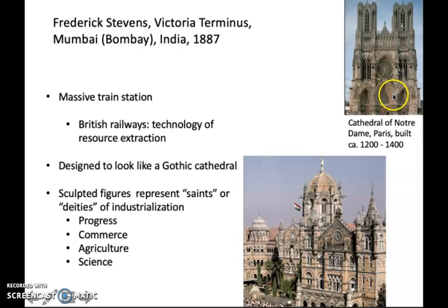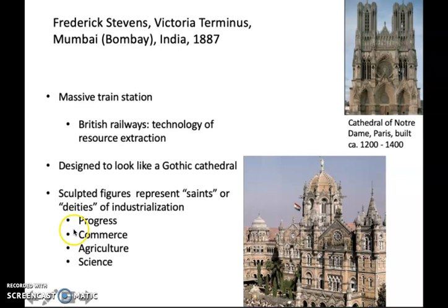In Gothic cathedrals there were numerous sculptures — here at the center, too tiny to see, but there's the Virgin Mary and baby Jesus. Sculptures like that appear on Victoria Terminus, but now these sculpted figures represent abstract ideas about modern progress: one figure representing progress, another representing commerce, agriculture, science. In a sense, this claims that the British project of economic development in India is something almost sacred — a blessing upon India.